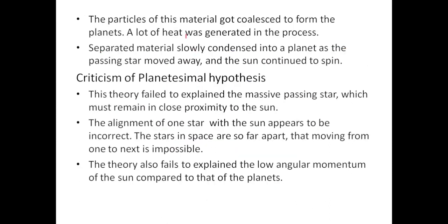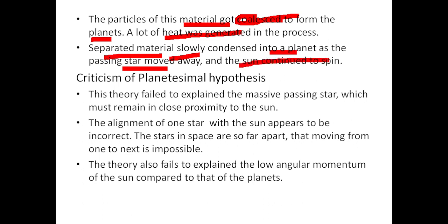And these particles of materials got coalesced to form the planets. Coalesced means to join into a single form. A lot of heat was generated in the process. The separated material slowly condensed into a planet as the passing star moved away and the sun continued to spin.